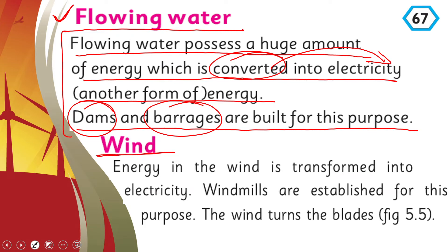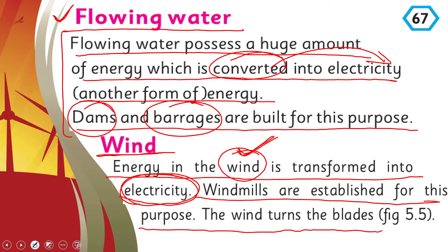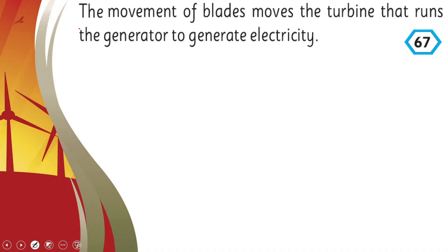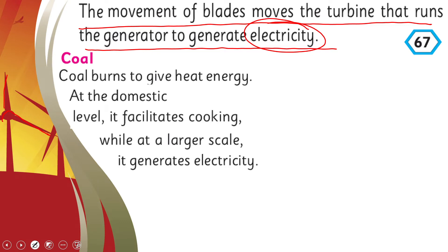Wind energy is transformed into electricity. Moving wind has a lot of energy and it is converted into electrical energy. Windmills are established for this purpose. The wind turns the blades of the windmill rapidly. The movement of the blades moves the turbine, which runs the generator to generate electricity.